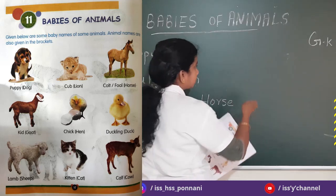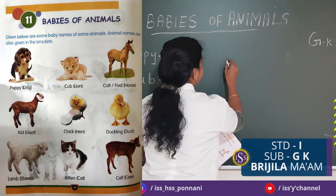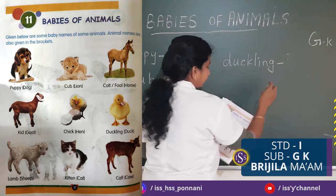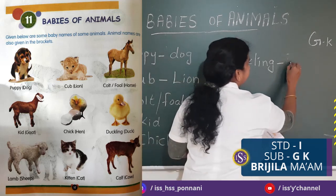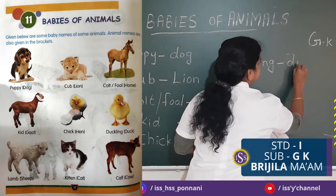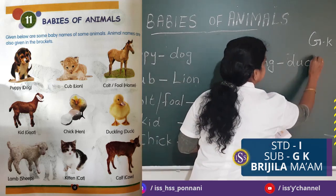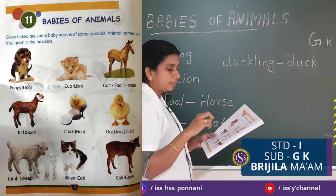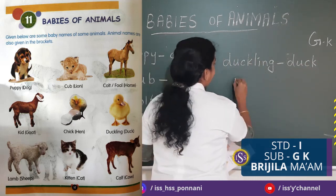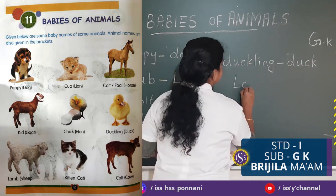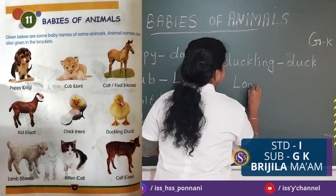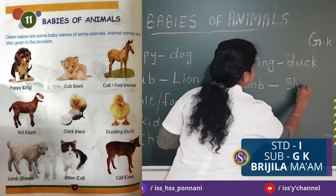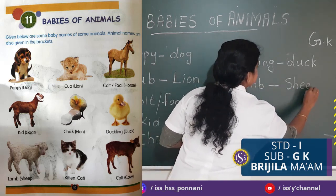Next — Duckling. What's the name of the baby? Duckling. Next — Lamb. What's the name of the baby? Animal is Sheep. The sheep's baby is called Lamb.